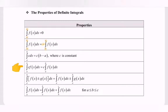Next, integrate the constant c multiplied by the function f(x) with respect to x from the limit a to b, which is equal to factoring out the constant c and then rewriting the integral of f(x) with respect to x from the limit a to b.